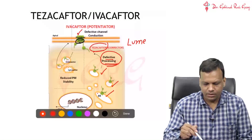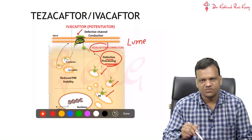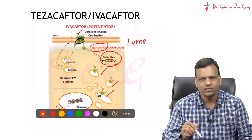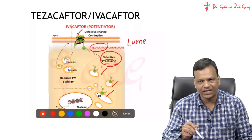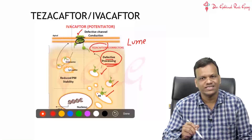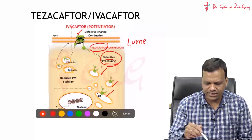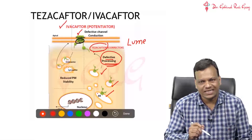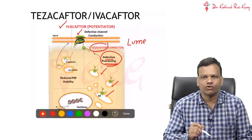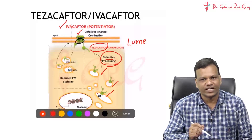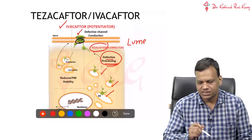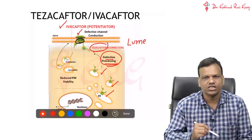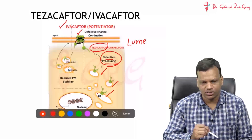Even if the channels come to the surface, if they do not conduct chloride it will be useless. So we have to increase the activity of the channel. This drug is called Evacaftor. Evacaftor increases the entry of chloride through the defective channel, so it is called a CFTR potentiator. This combination is used for cystic fibrosis.